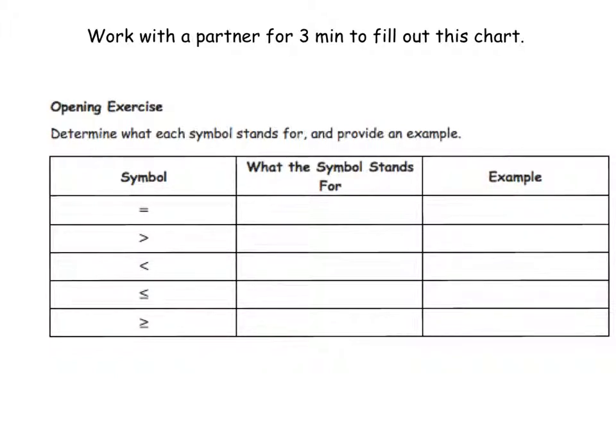So the first one I think you know means is equal to, and we could say that 1.25 is equal to 1 and 1 fourth. Both sides of the equal sign equal the same thing. They name the same quantity.